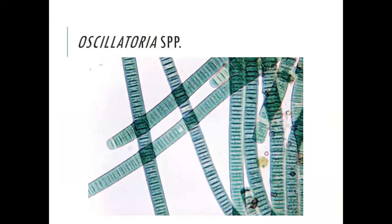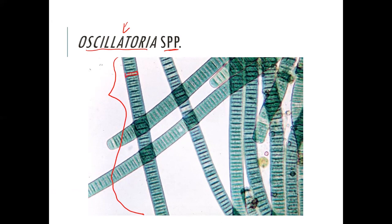A real-world example is the Microcystis cyanobacteria bloom in the St. Johns River, which produces a toxin called microcystins. Now let's look at specific cyanobacteria genera you need to know. The first is Oscillatoria spp. — they are filamentous, growing in long chains. Individual cells are often described as looking like books on a bookshelf. That's an easy way to identify Oscillatoria.